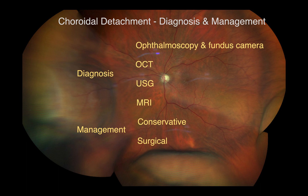Enhanced depth imaging OCT or swept source OCT may also enable visibility of the suprachoroidal layer in some healthy eyes. However, in eyes with pathology, most of the time the suprachoroidal layer is not visualized.